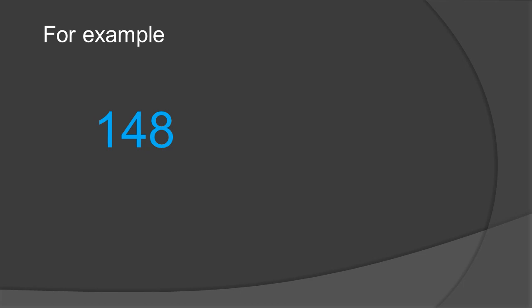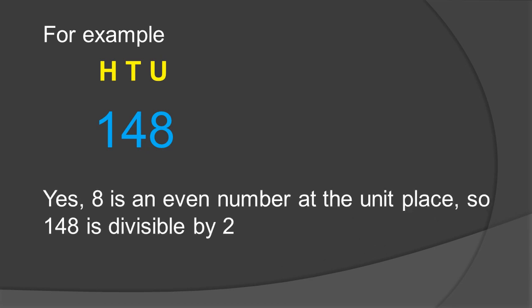For example, see this number 148. First of all, give it a place value on the top: units, tens, hundreds. According to rule number 1, we have to see only the unit place — whether we have any even number at the unit place or not. We have 8 at the unit place. 8 is an even number, so 148 is divisible by 2. Yes, 8 is an even number at the unit place, so 148 is divisible by 2.